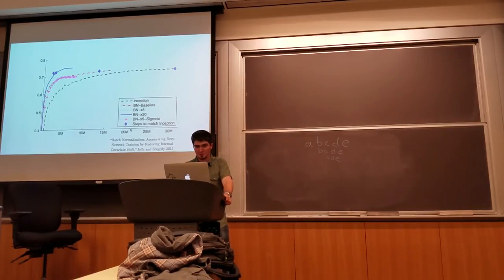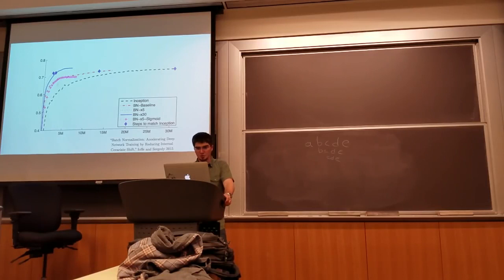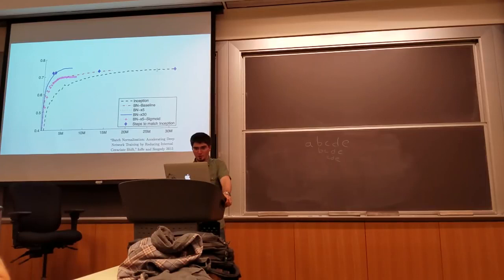Looking at actual learning curves: the baseline Inception is the dotted black line. Using batch normalization, it's possible to reach higher levels of accuracy in much less time, in part because the learning rate can be much larger and remains stable due to the normalization layers. Sigmoid layers, represented by the pink line with plus signs, can actually be trained quite well — at the start they outperform the original Inception without batch normalization, though they do saturate a little before reaching the baseline's final accuracy.